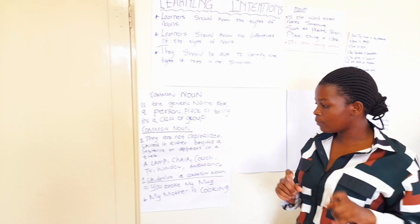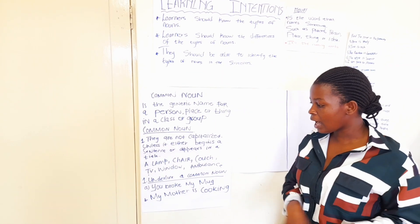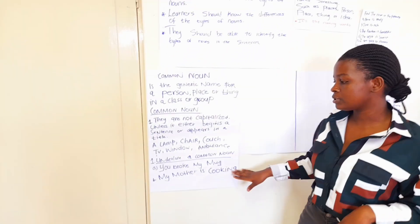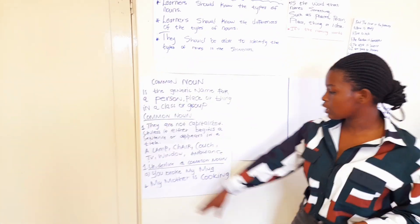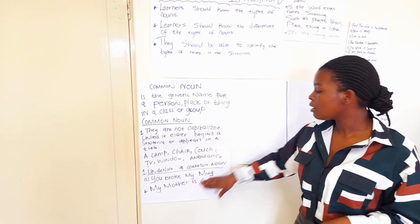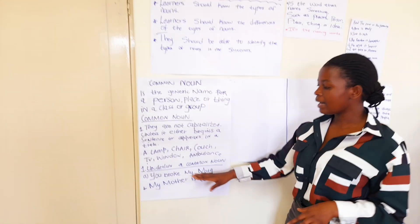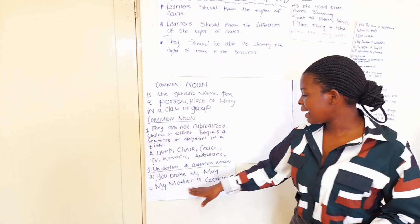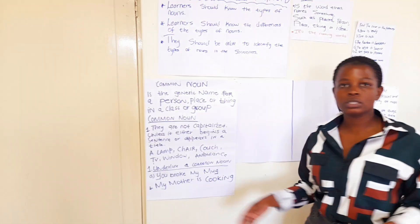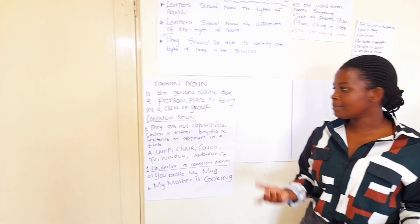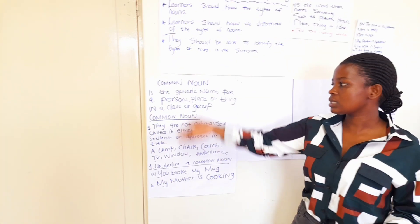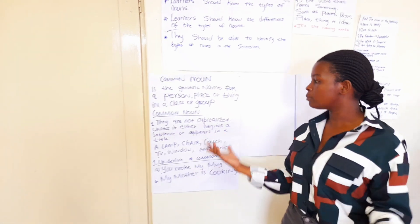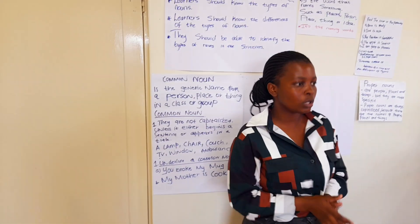In this worksheet activity, we say underline the common noun. The first sentence says: you broke my mug — so 'mug' is the common noun. Then: my mother is cooking — mother is a person, so 'mother' is a common noun. I'm going to pass to my colleague.